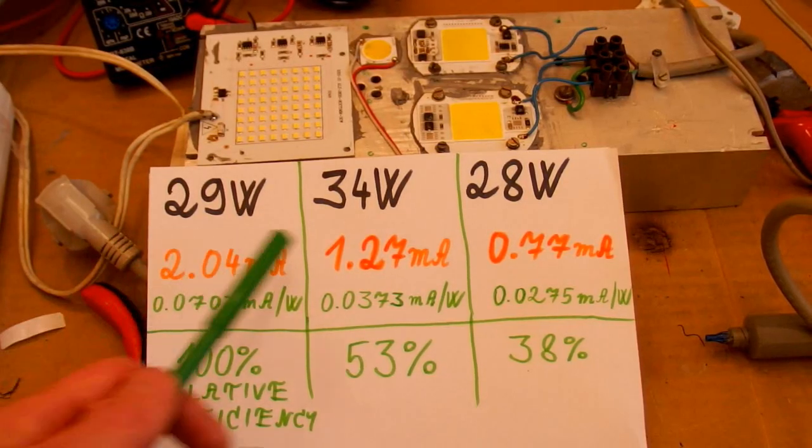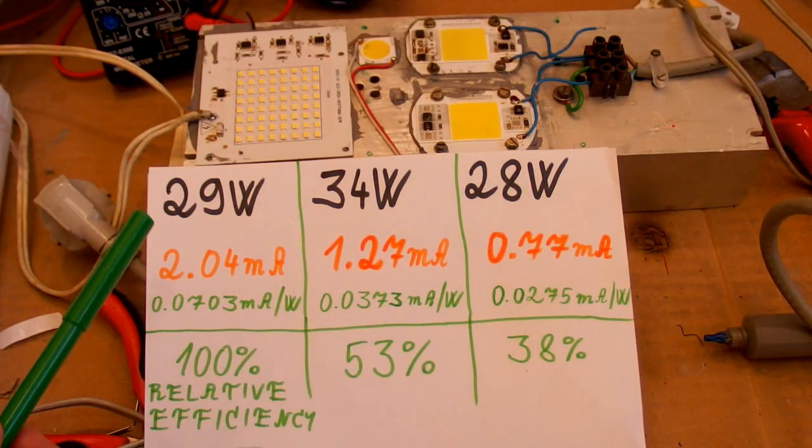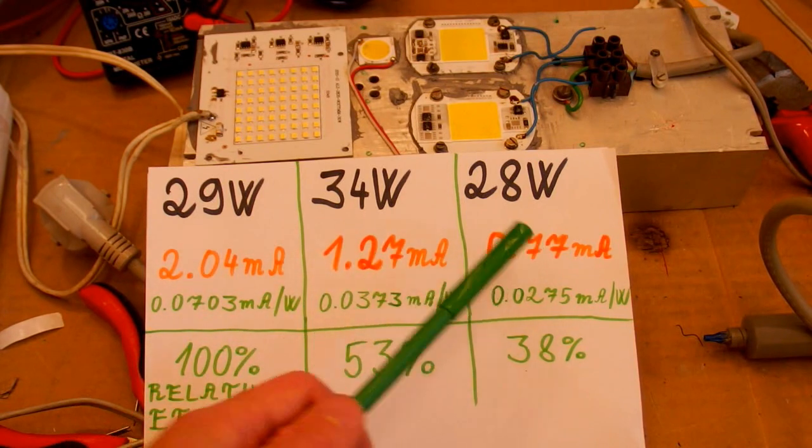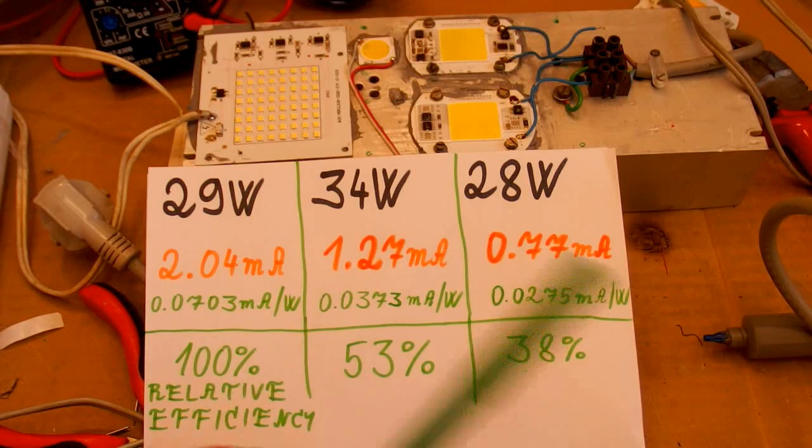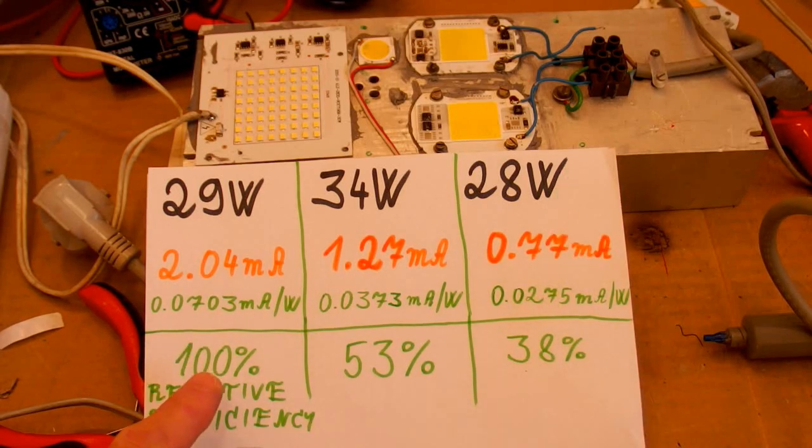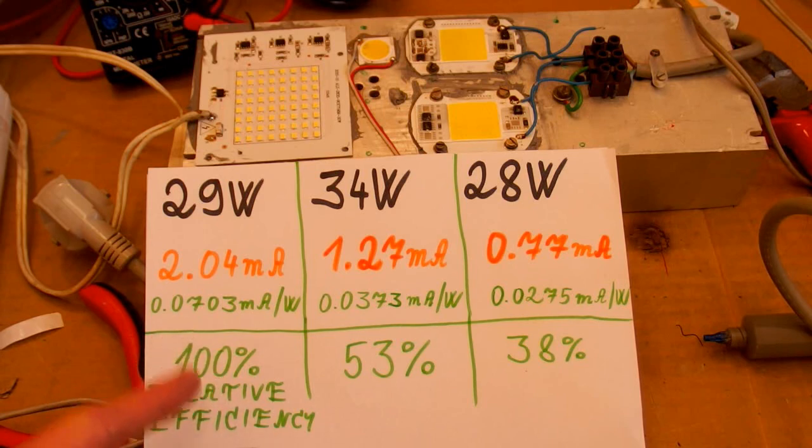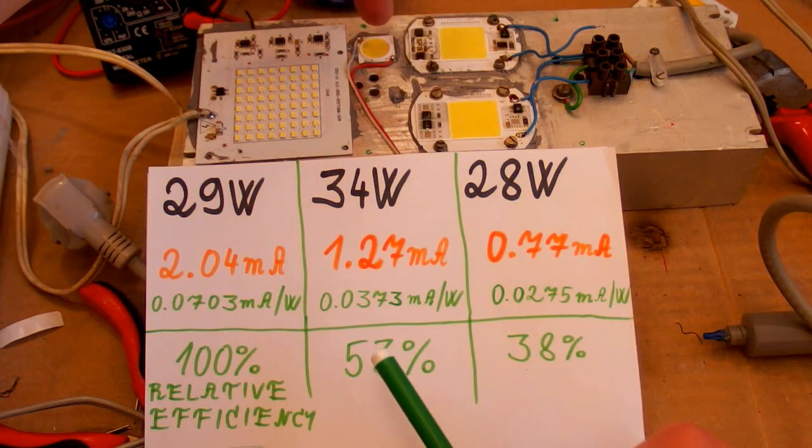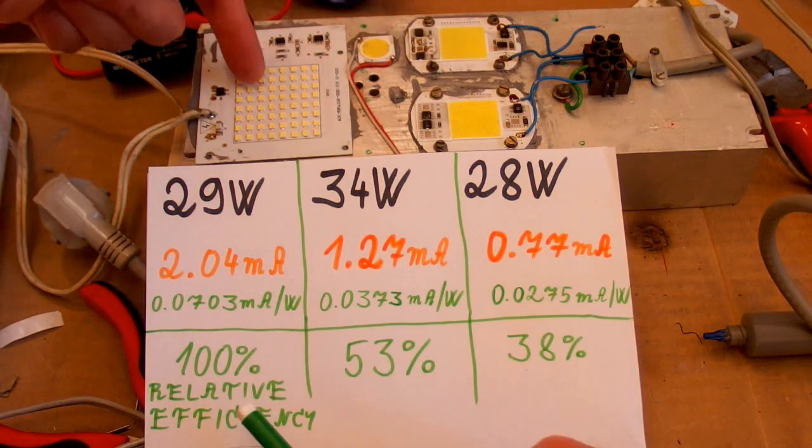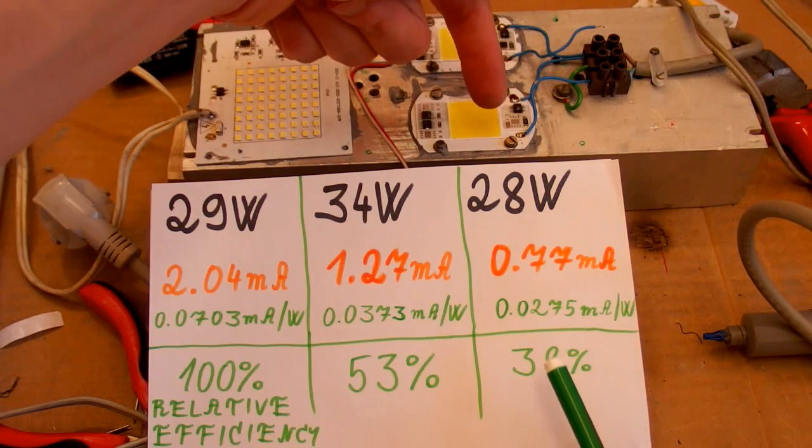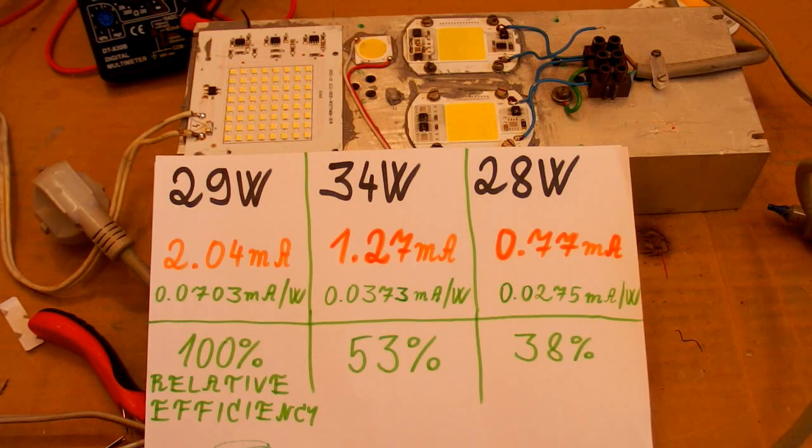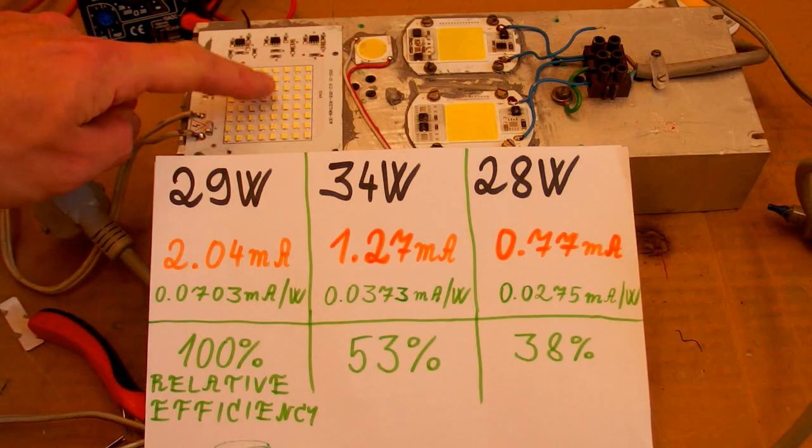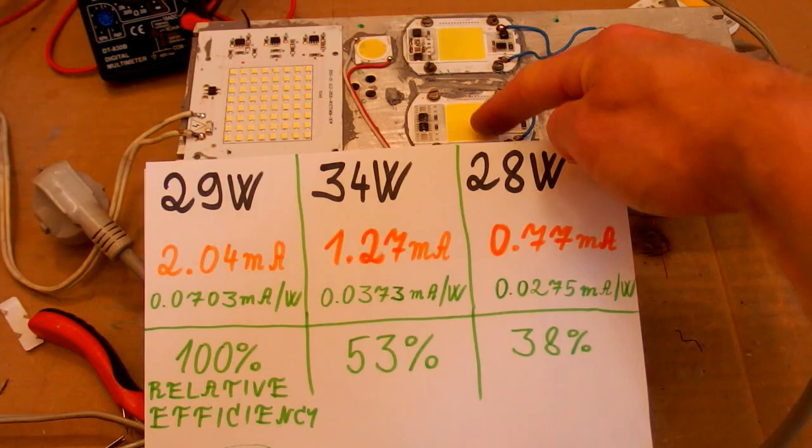And here you can see the currents and some calculations. Here you can see the current it produced in my solar panel and the current per watt. And here's the relative efficiency compared to this one. This one is the most efficient so I calculated the relative efficiency compared to this one. And this LED has only 53% of the efficiency of this one. And this one only has 38% of the efficiency of this one. So this LED comes out as the most efficient one. And this one is the worst one.